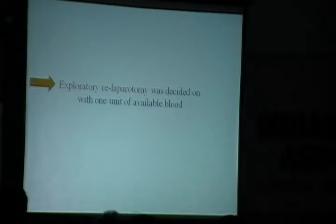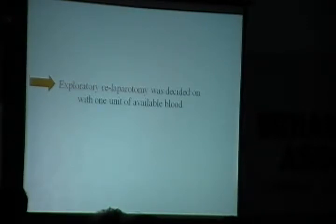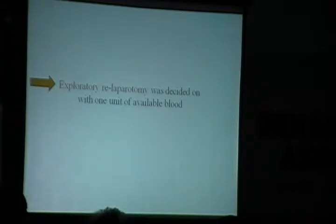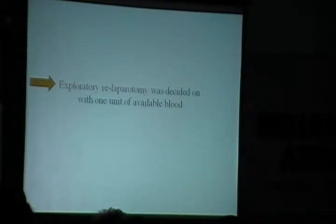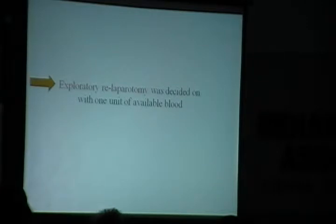We ordered six units of blood, but while we were preparing to operate we had only one unit available. Three relatives went in three different directions to get blood, but they came back after four hours saying they couldn't reach the blood bank. After we finished the surgery — after about two hours — only then did we have the blood. At laparotomy, there were pumping bleeders from the left angle of the cesarean section, a large hematoma of the left broad ligament, and some bleeders from the posterior aspect of the uterus.